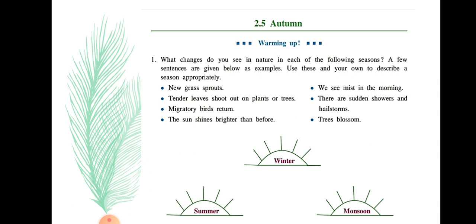Children, describe on your own in your English notebook the winter season, summer season, and monsoon season — what changes occur in these seasons. For example, the sun shines brighter than before in summer season. Trees blossom in winter season. We see mist in the morning. Migratory birds return in monsoon season. New grass sprouts, tender leaves shoot out on plants or trees, there are sudden showers and hail storms.